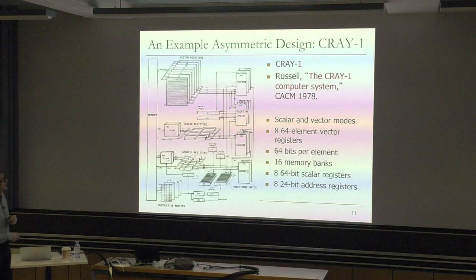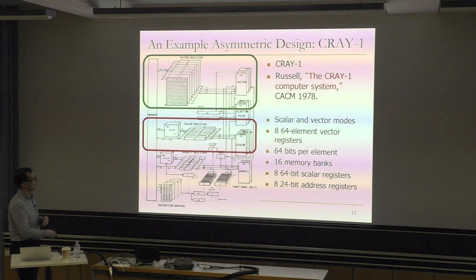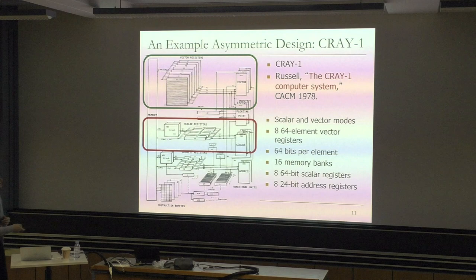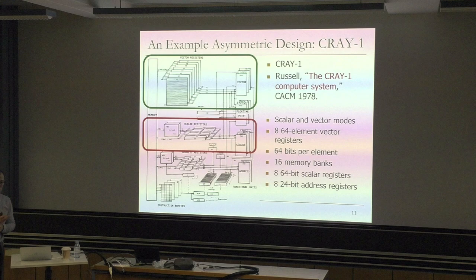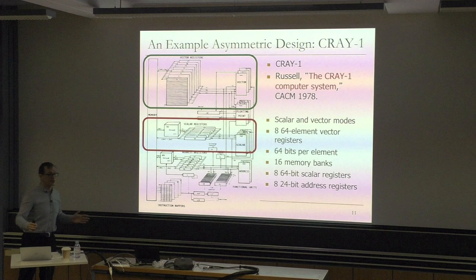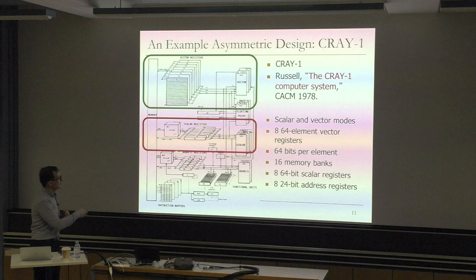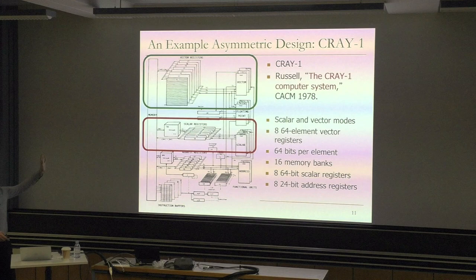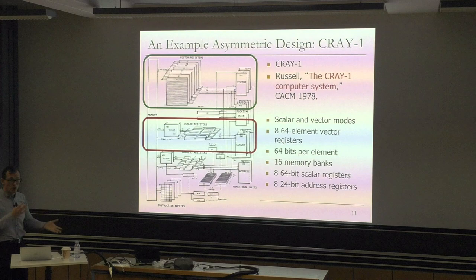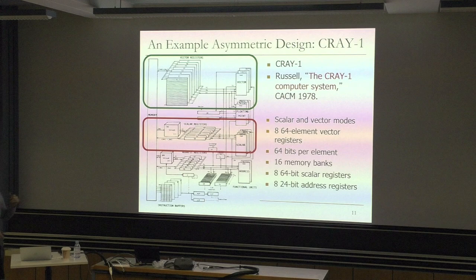The Cray-1 was actually the fastest scalar processor of its time as well. They made the scalar part of the machine extremely fast because they wanted to get out of the serial bottleneck very quickly, while they could execute the parallel portion very fast via the vector units. That's why it was the fastest scalar machine of its time - also the fastest vector machine - but it's both, and it's heterogeneous. It wouldn't be both if one were missing. If the vector part is missing, you're a scalar machine; if the scalar part is missing, you're limited by the serial bottleneck.